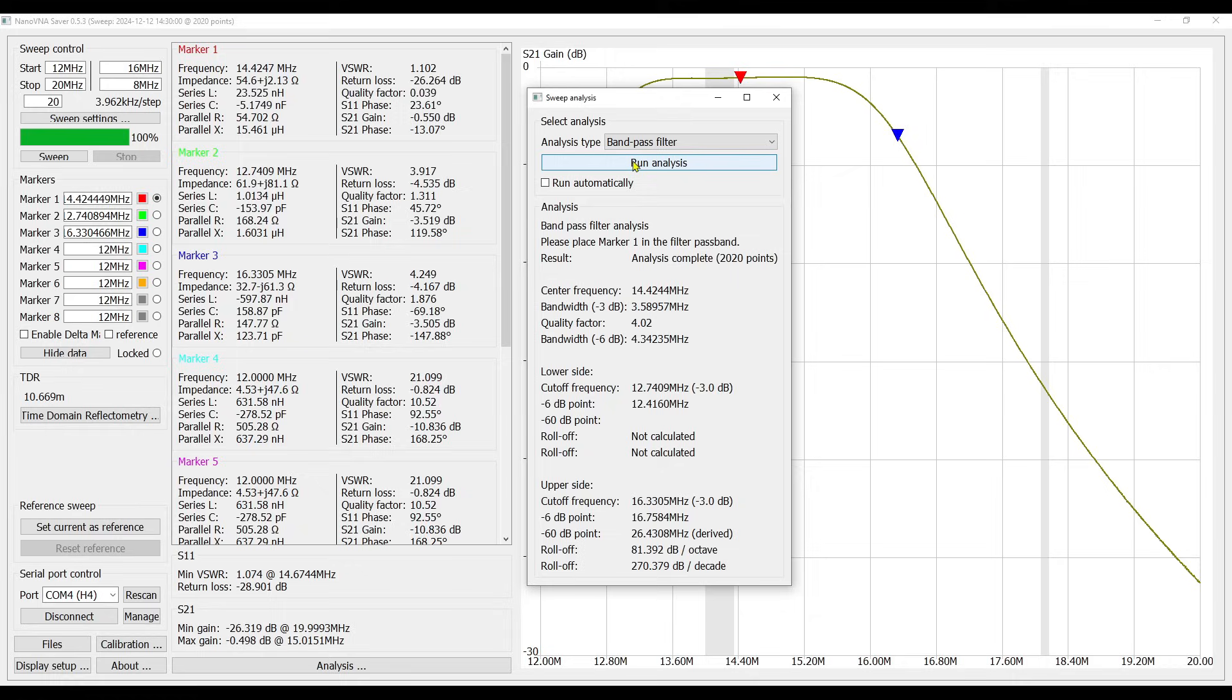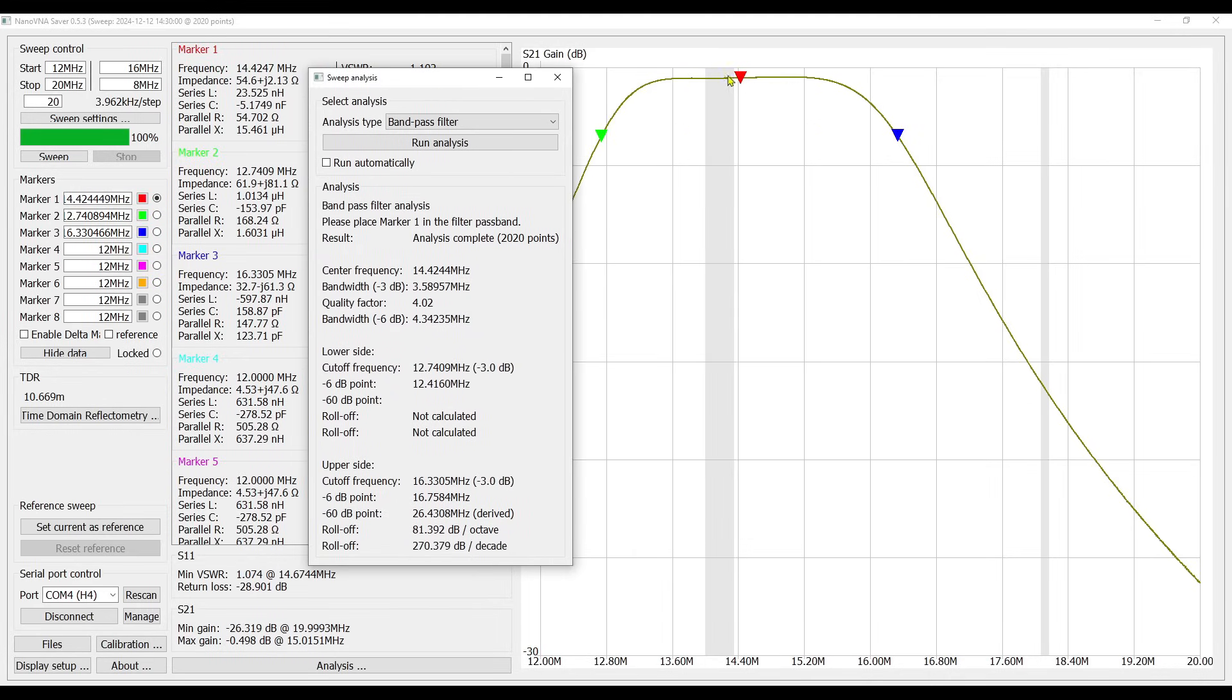And then we are going to click here for run analysis. And so it's telling us our center frequency for this is at 14.4244, which is actually just a little bit above the band. And then it's going to tell us our bandwidth at negative 3 dB. And we spoke about that. We're looking at around 3.5 megahertz of bandwidth. So if that run one rating was correct on the filter, this is a little bit wider than that. Quality factor is 4.02 and our bandwidth at a negative 6 dB is 4.34. But you can see there is no other ham bands here. So you should be okay using this at something like field day or winter field day. Pretty happy with it and not going to complain. Let's set up and test the 40 meter or 7 megahertz band pass filter and see if we get similar results.